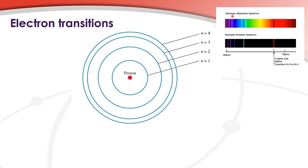Previously, we looked at the absorption and emission spectra of different elements. And now we're going to look at the reasons for these black lines on the coloured background of an absorption spectrum and the coloured lines on the black background for an emission spectrum.